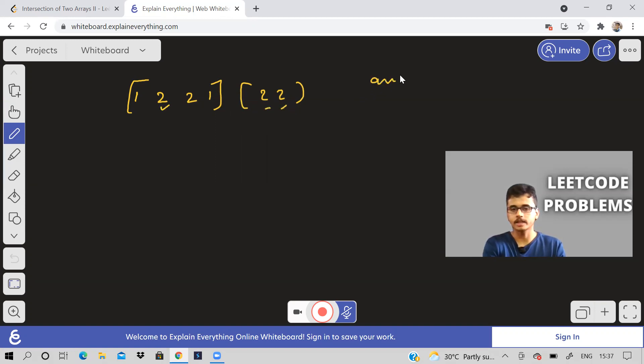So in our answer array, we should return two, two. For example, if there is another array like this, consider the arrays are like this. It is not necessary both of them have to be equal. So what will you then return?